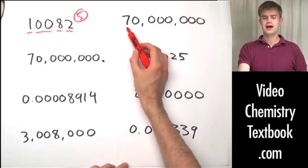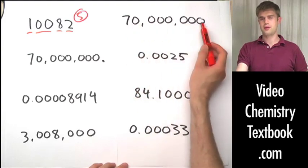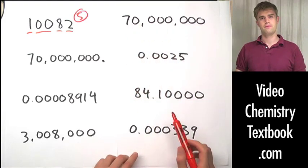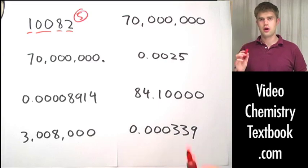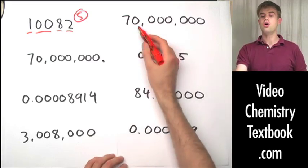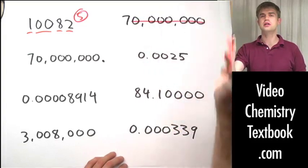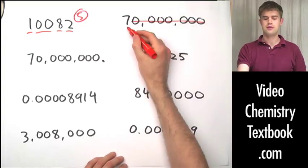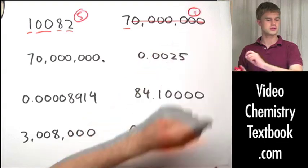Here we have one non-zero digit with a whole bunch of zeros coming to the right. The question we ask ourselves is: is there a decimal point in the number? There is not. No decimal point, no significance — this means there's only one significant figure in this number.